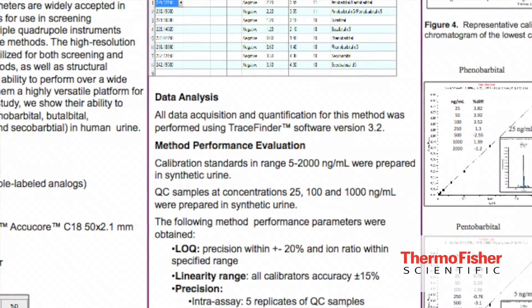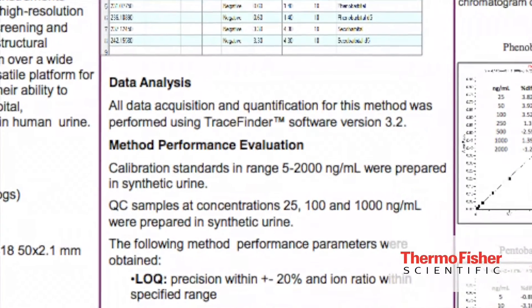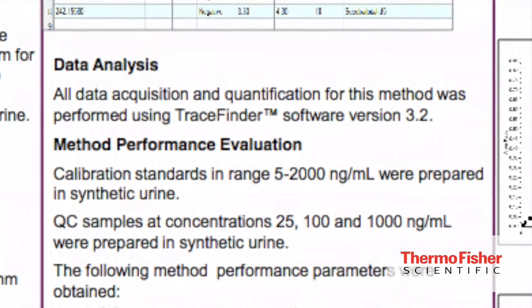In a parallel reaction monitoring experiment, each precursor ion is isolated in the quadrupole, followed by fragmentation in the collision cell. The complete fragmentation spectrum is acquired in the Orbitrap using a resolution of 35,000.